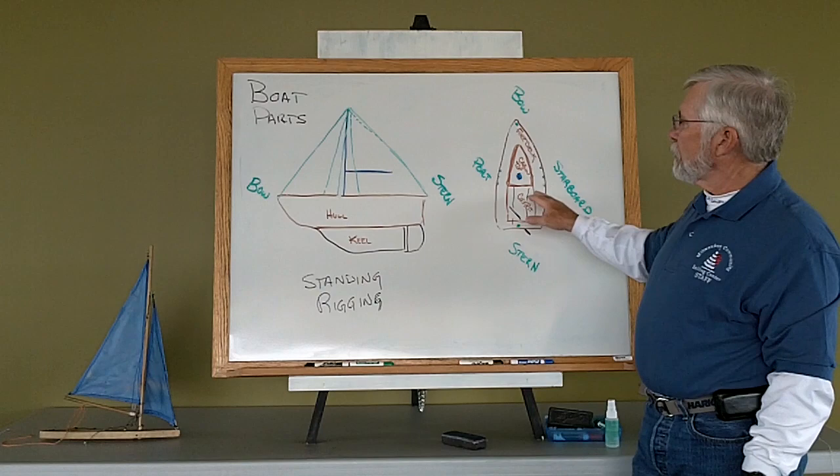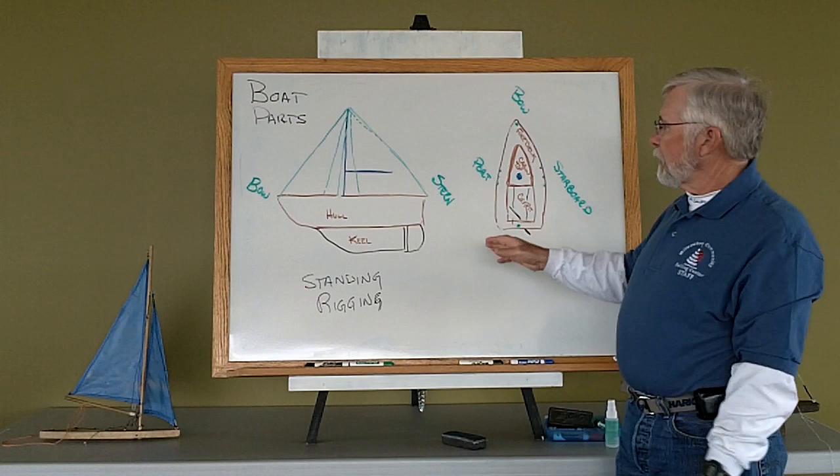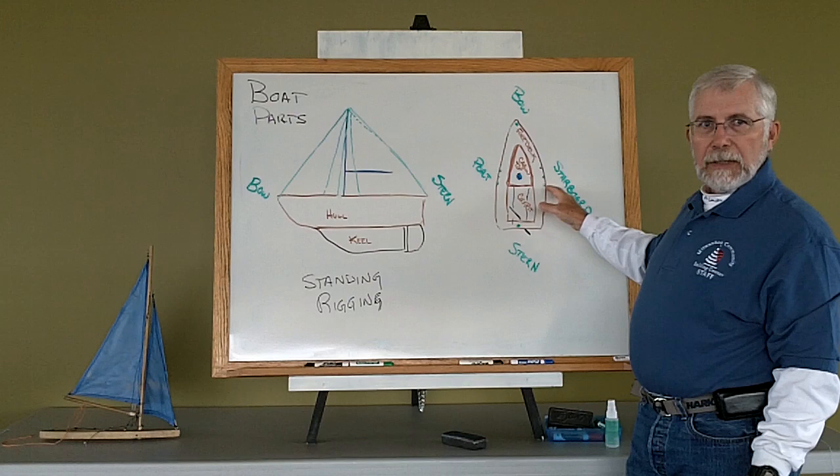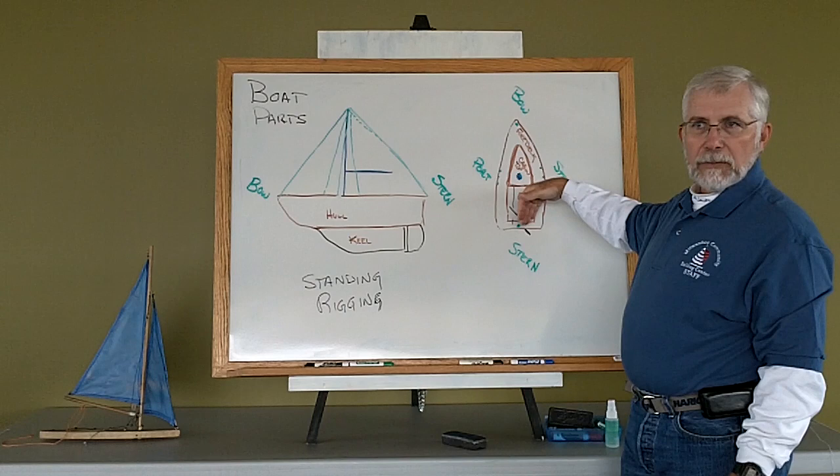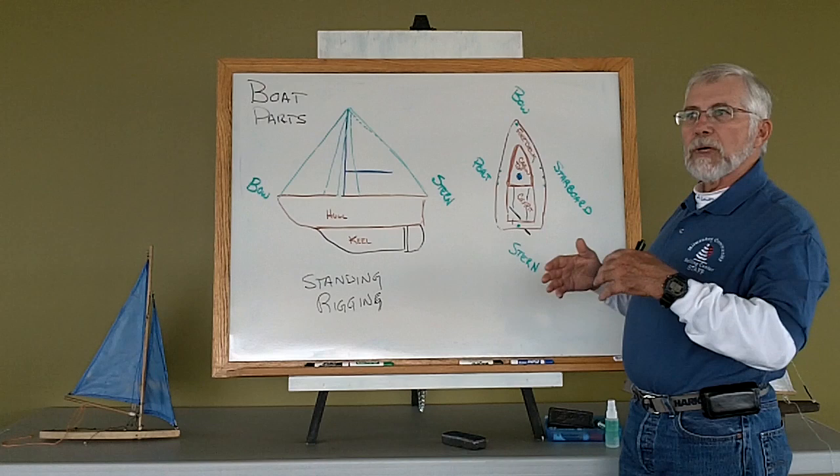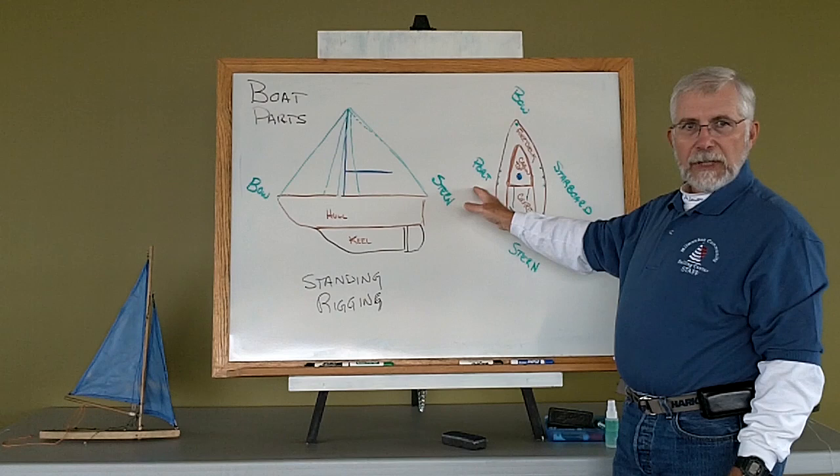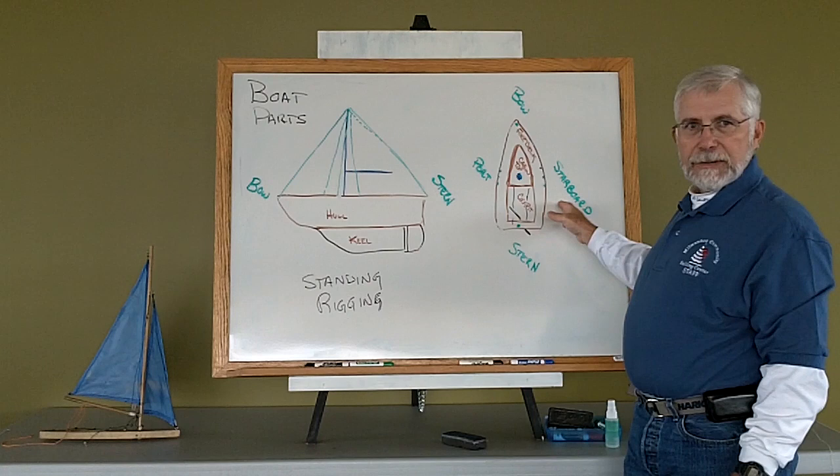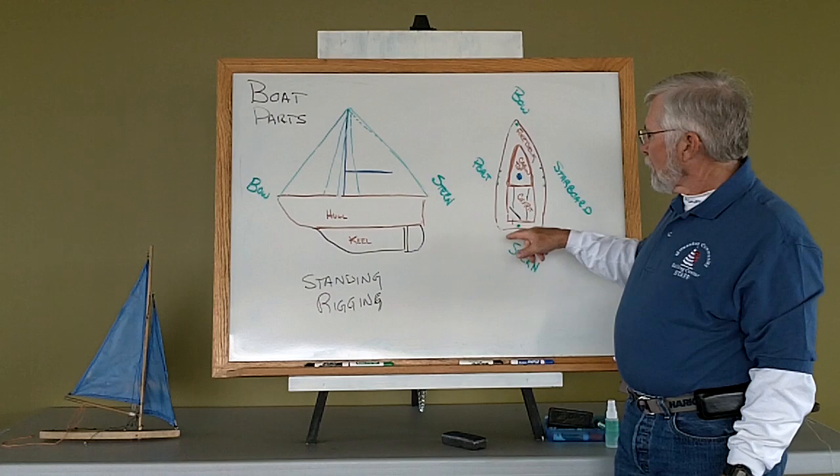The sides of the boat we refer to: the left side of the boat as we're facing forward is port. The right side of the boat as we're facing forward is starboard. When I turn around and look to the back of the boat, port and starboard don't change because it's always viewed and communicated in relationship to looking forward. The port side of the boat is always the same side. It's the left side when you're looking forward. Starboard is the right side when you're looking forward.